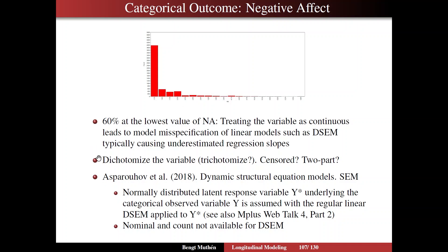So I'm going to stay with dichotomizing the variable. If you do that, you can fall back on the original paper by Asparahov and others in the SEM Journal — the original dynamic structural equation modeling paper — where there was a section on working with categorical Y variables. We assume normally distributed continuous latent response variables, called Y-star, underlying these categorical observed variables. When you do that, you have a continuous variable for which regular linear models are relevant, so you apply DSEM to the Y-stars instead of to the Ys, and you are at least not making an obvious specification error.